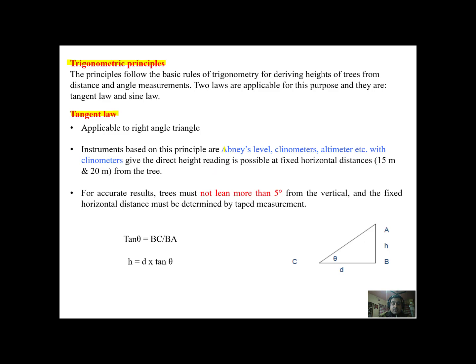Now this principle is applied to instruments like Abney's level, clinometers, altimeters etc. when for a horizontal distance of 15 meter or 20 meter. So they are calibrated for those two distances and have to be used at a distance of 15 meter or 20 meter from the base of the tree.